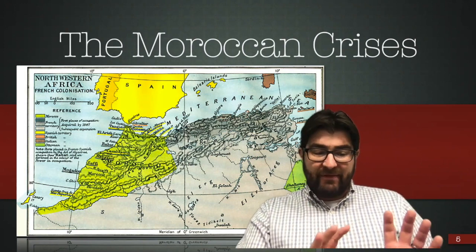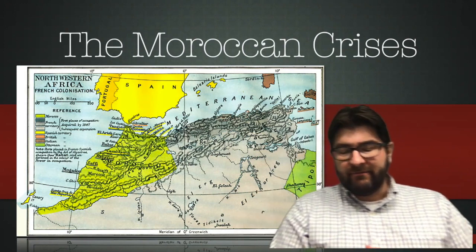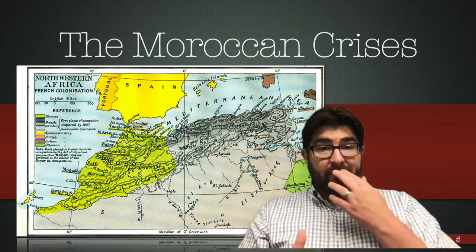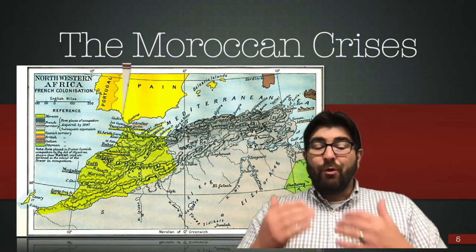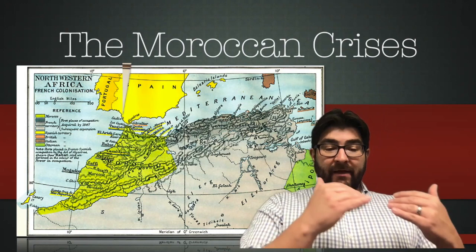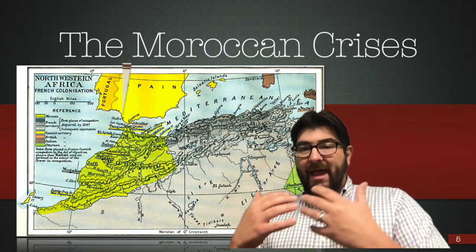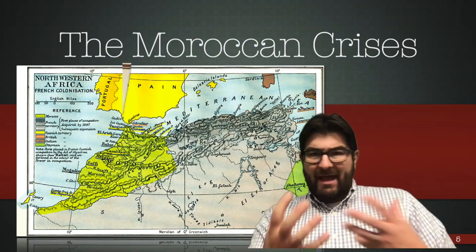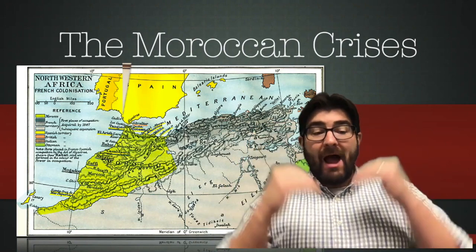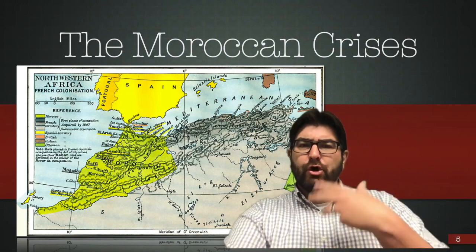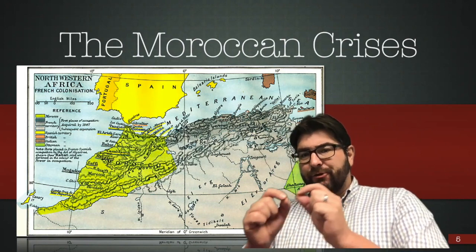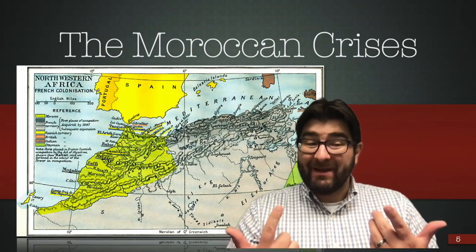Ultimately, France came out of the first crisis as the recognized controller of Morocco, but it raised tensions between Germany and France. This continued in 1911, when the Germans again advocated for the independence of Morocco and a Moroccan popular uprising. France once again saw this as a threat and tensions rose. Ultimately no war came between the two nations, but each side prepared for war — showing us that this push for overseas empires was creating greater tensions between European countries that already had grievances with each other.